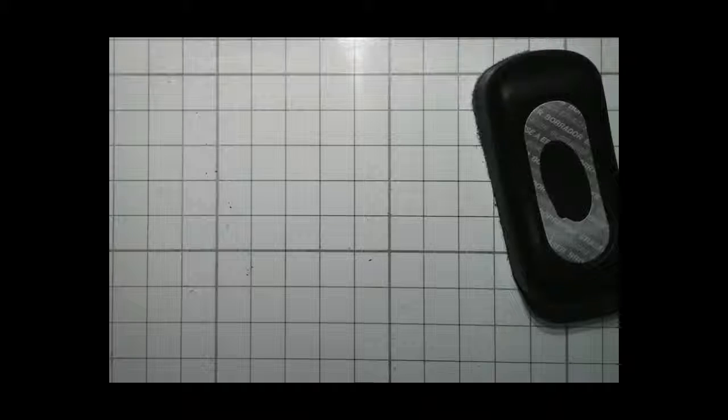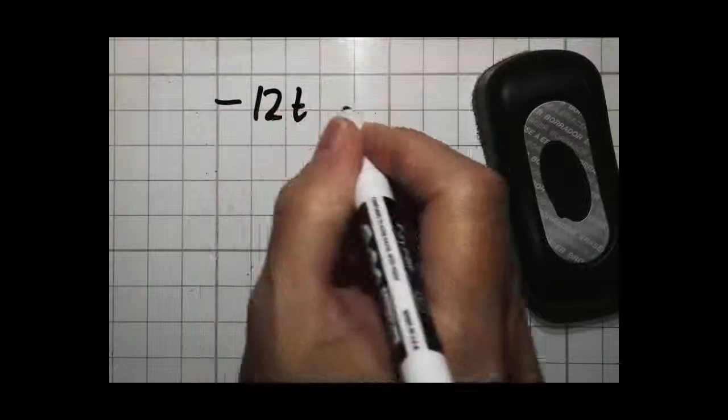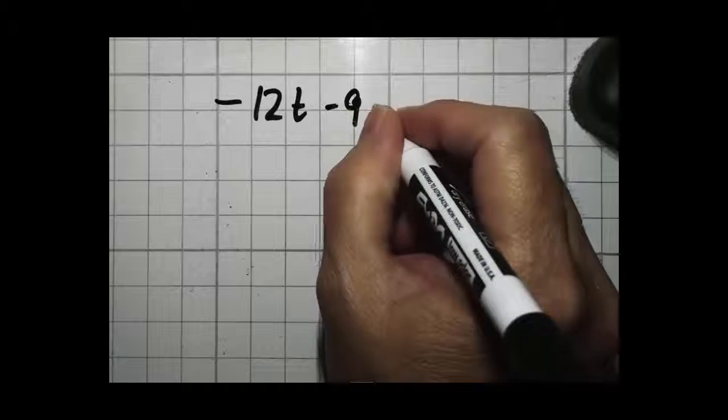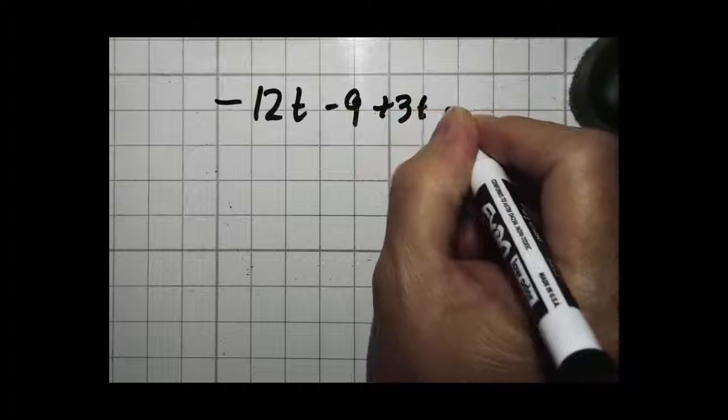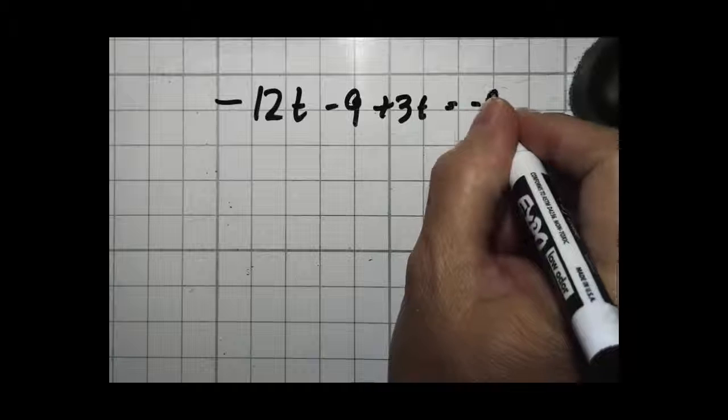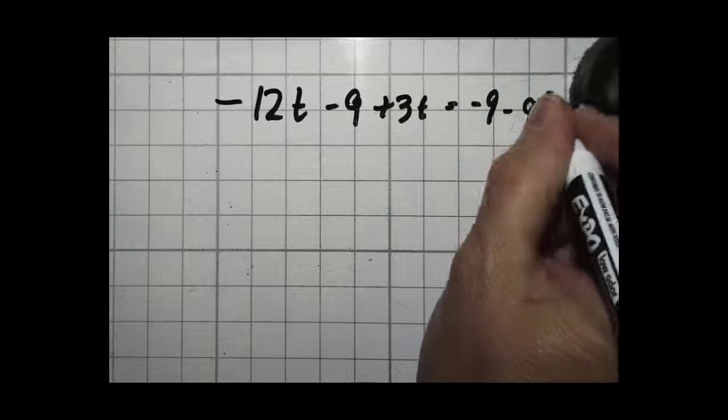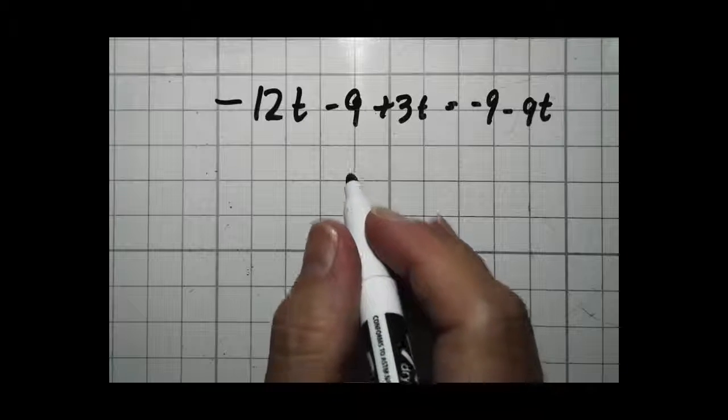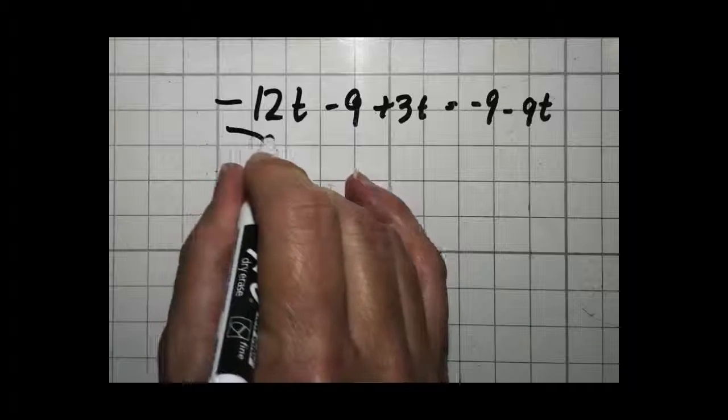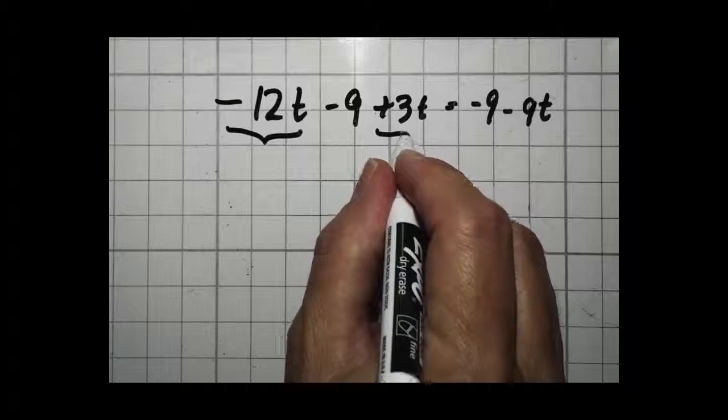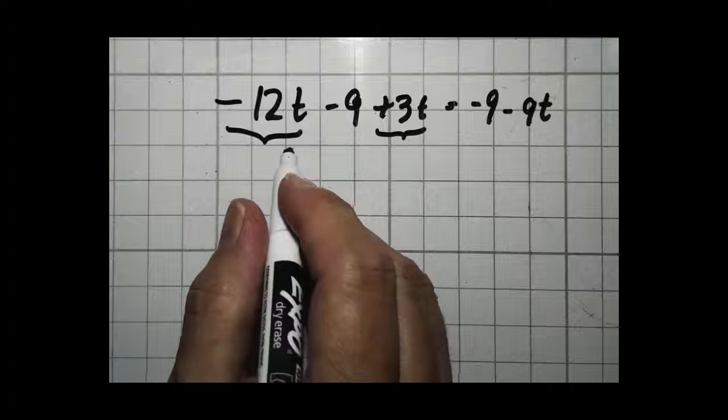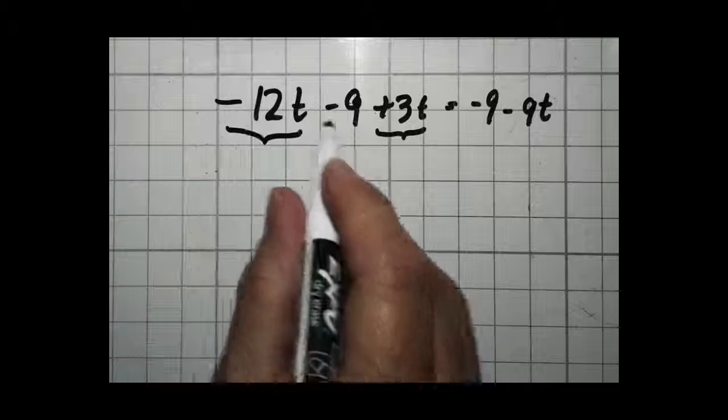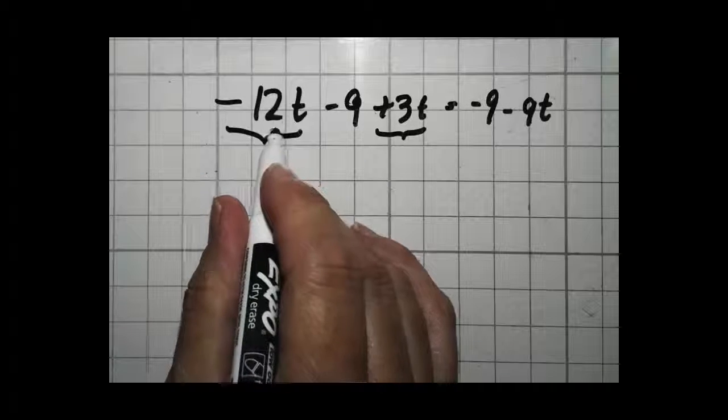Two more problems. Negative 12t minus 9 plus 3t equals negative 9 minus 9t. We have a little bit of work to do before we solve this. We have to combine like terms on both sides. So we have negative 12t plus 3t. We're going to put those together. Remember, the sign stays with the number. This negative sign stays with the 12. The plus stays with the 3.